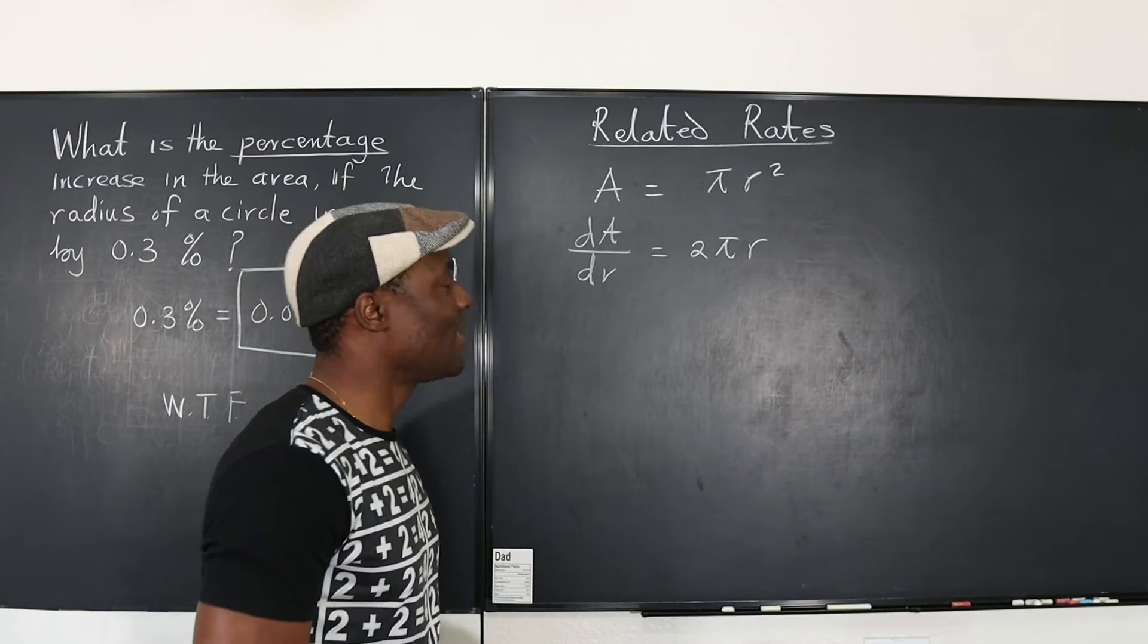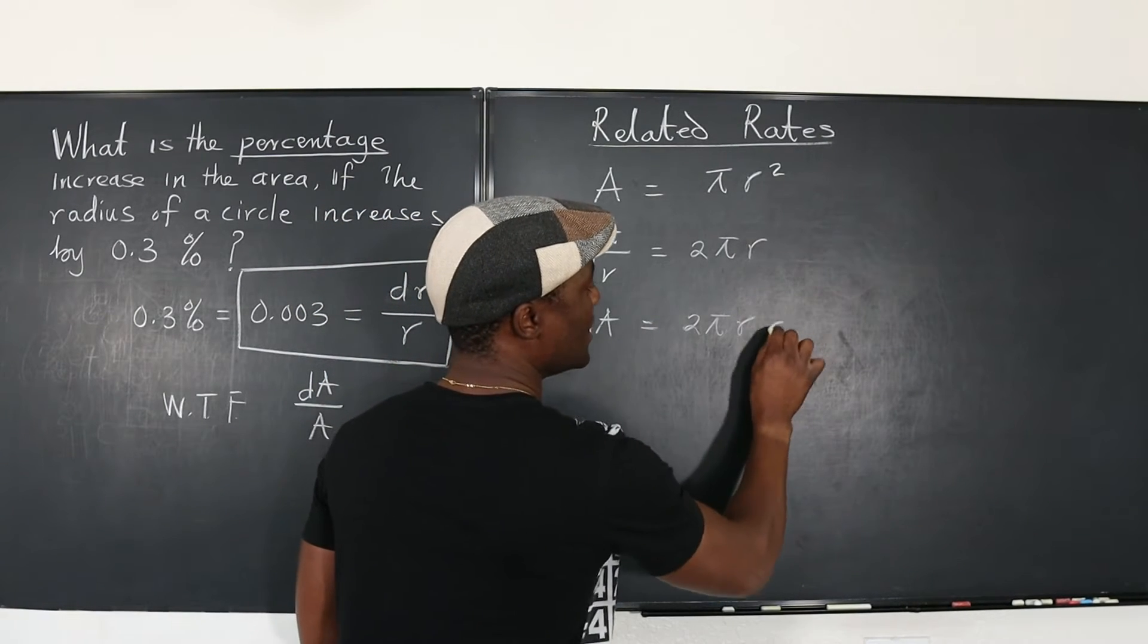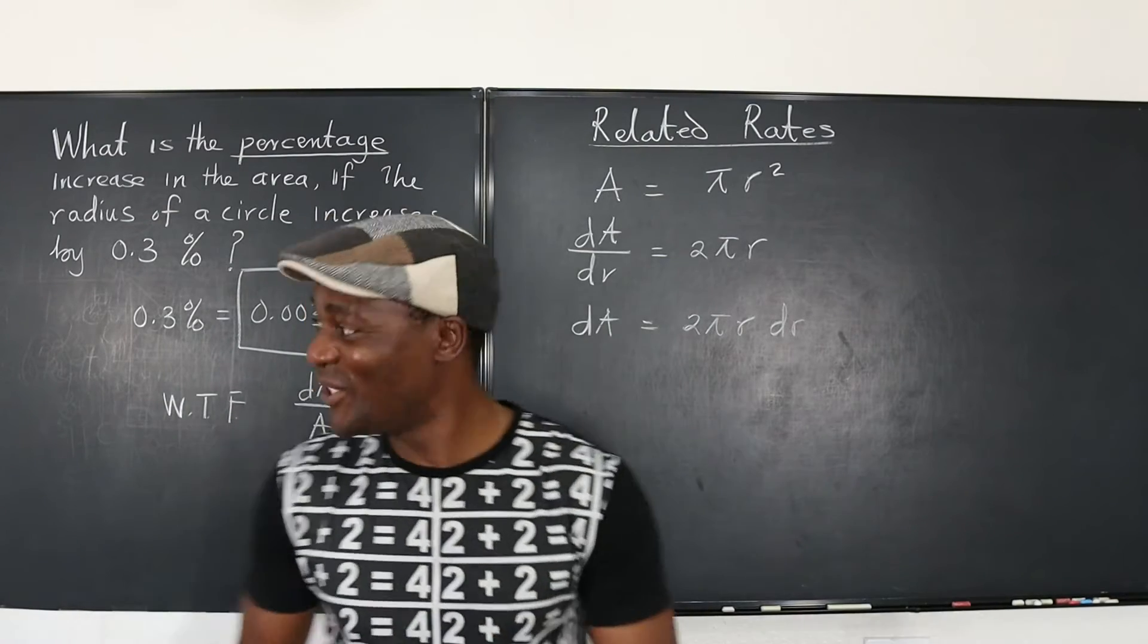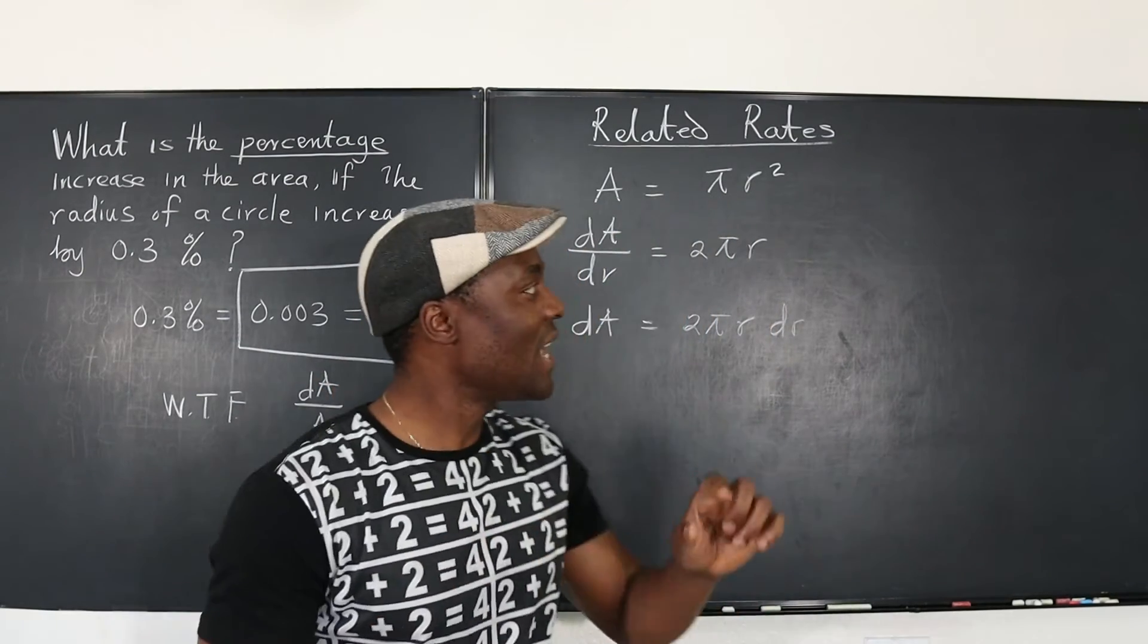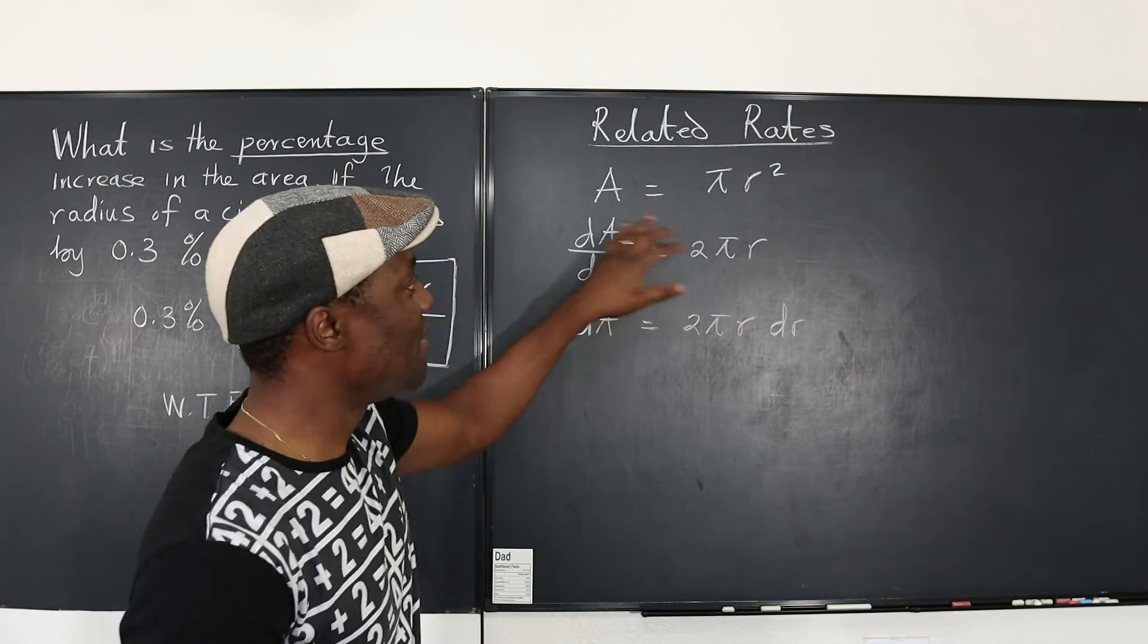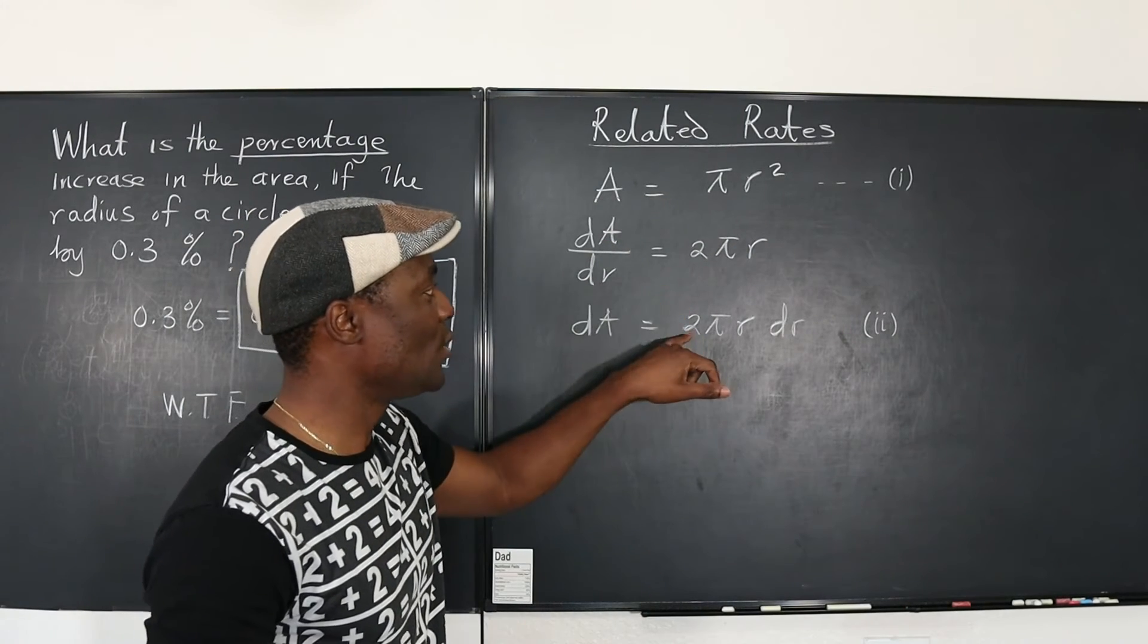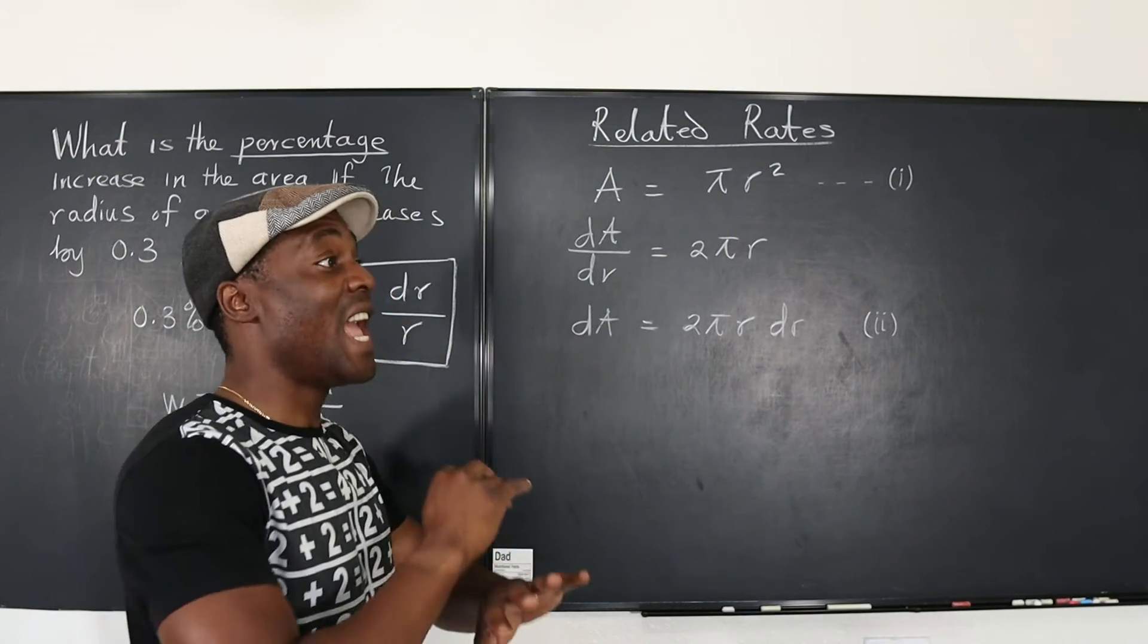Now we can establish that dA equals 2π r dr. It's beginning to look nice. We're almost done because the next thing you need is to be able to establish dA over A and dr over r. Look at this: A equals π r squared. We can divide. Let's call this equation 1 and this is equation 2. You can divide equation 2 by equation 1.